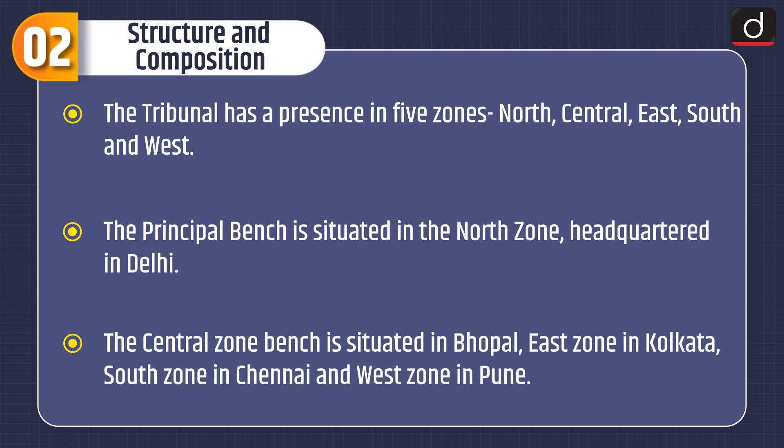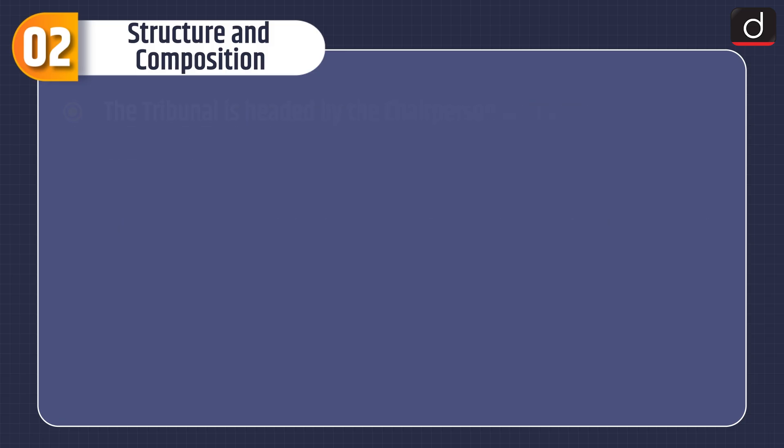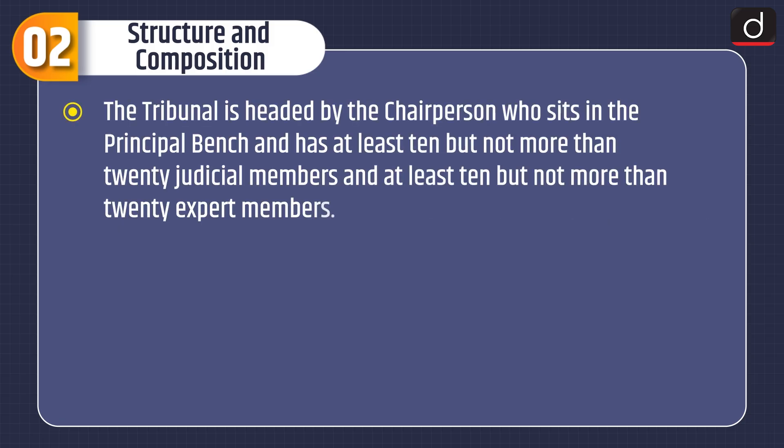The central zone bench is situated in Bhopal, east zone in Kolkata, south zone in Chennai and west zone in Pune. The tribunal is headed by the chairperson who sits in the principal bench and has at least 10 but not more than 20 judicial members and at least 10 but not more than 20 expert members.